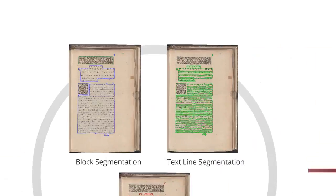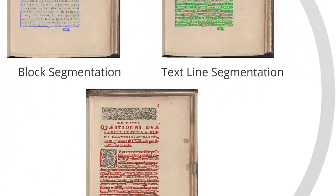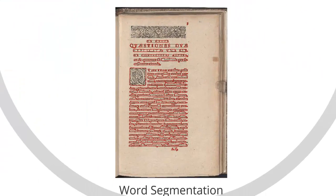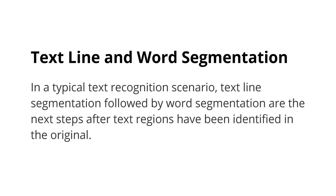In a typical text recognition scenario, text line segmentation followed by word segmentation are the next steps after text regions have been identified in the original. Segmented words are subsequently passed on to character segmentation, which provides the input for the actual character classifier, which is part of any OCR software.